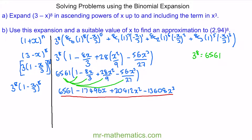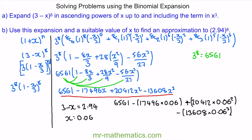For part b, we've been asked to use this expansion and a suitable value of x to find an approximation to 2.94 to the power of 8. Like before, we say 3 minus x equals 2.94, so x equals 0.06. Substituting this value into our expansion gives approximately 5,609.3.